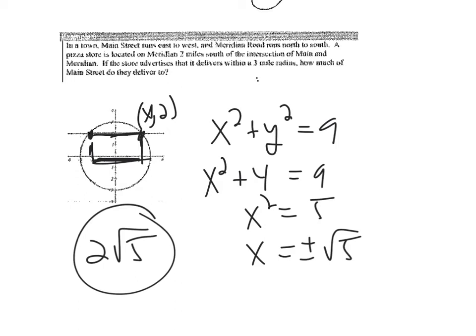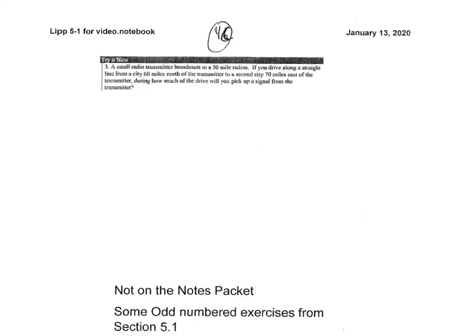The square root of 5 is a little bigger than 2, and looking at the graph that seems like a reasonable answer — the distance is a little bigger than 2.